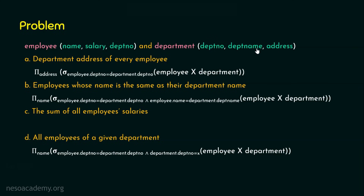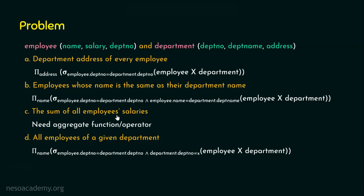We don't want all output — we want only a specific department. So we add the condition that the department table's department number equals x, where x is whatever department number the user provides. When both conditions match, we get all information of all employees of that given department. Finally, we project only the name. So option D can also be expressed using the basic relational algebra operations.